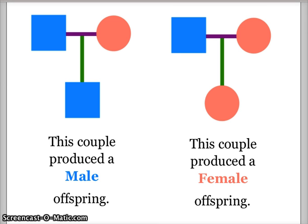To give an example: on the left, this couple has a male offspring, and on the right, this couple has a female offspring.